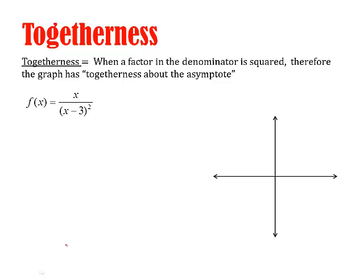Now, togetherness is what happens when a factor in the denominator is squared. We don't say it's multiplicity if it's in the denominator. But what happens then is that the graph has what we call togetherness about the asymptote. Because asymptotes come from the denominator, right?